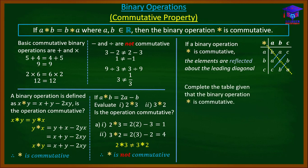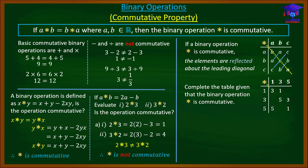So to complete a table given that the binary operation star is commutative, we use the reflection property. Since elements reflect about the leading diagonal, the missing entry corresponding to one position must equal its mirror entry — so that value is one. Similarly, the next missing entry reflects to give five, and another reflects to give three.